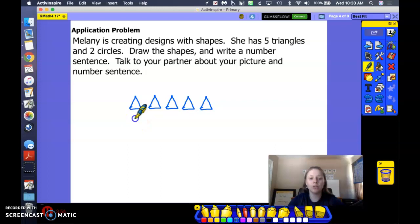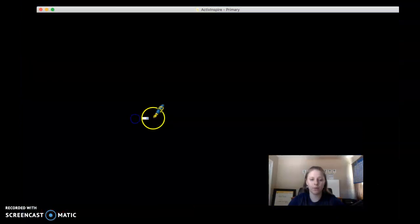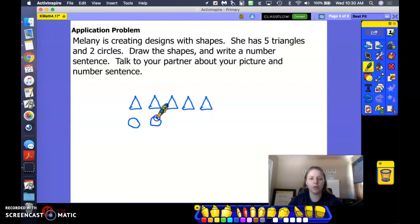Now she has 2 circles. 1, 2. How many shapes does she have all together? And let's write our number sentence. How many triangles? 5. How many circles? 2.